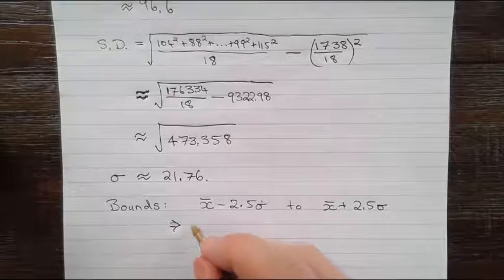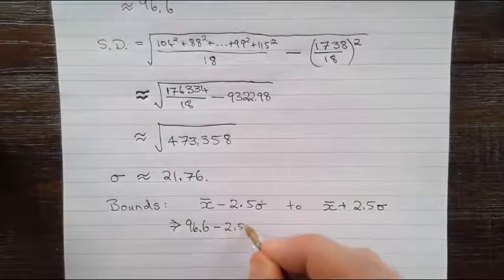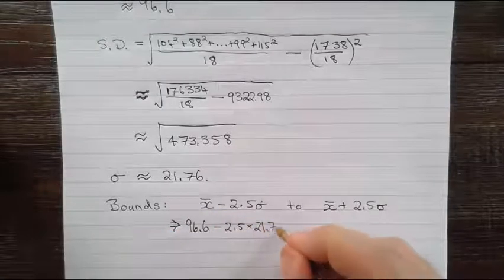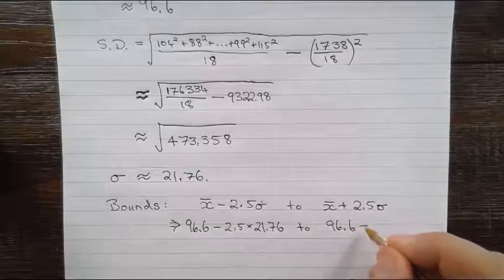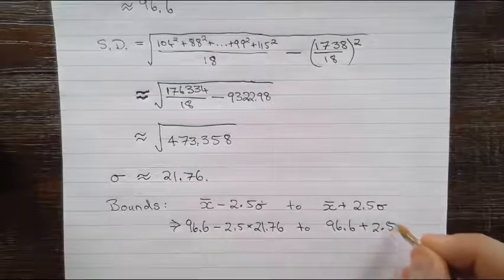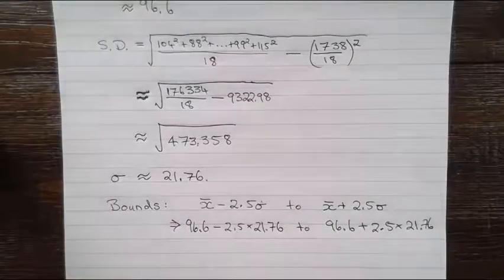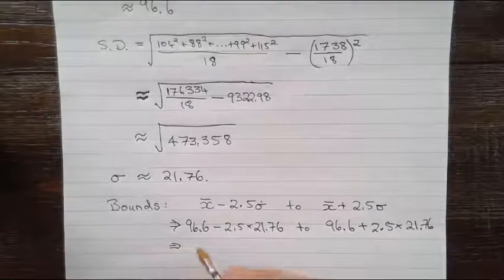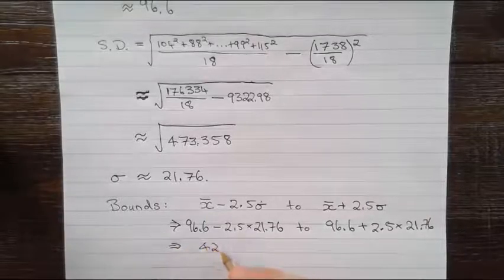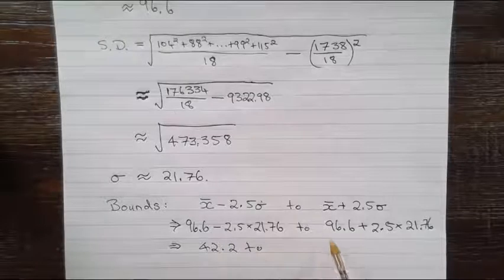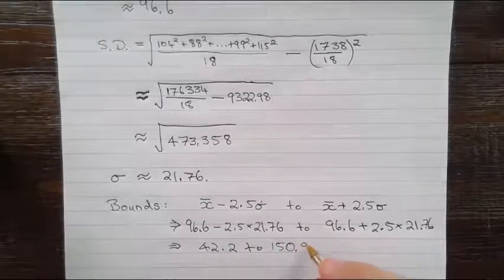So we have 96.6 take away 2.5 times σ, which is 21.76, all the way through to 96.6 plus 2.5 multiplied by 21.76. And again, to our calculator, this one is going to be approximately equal to 42.2, and this bound here is approximately equal to 150.99.